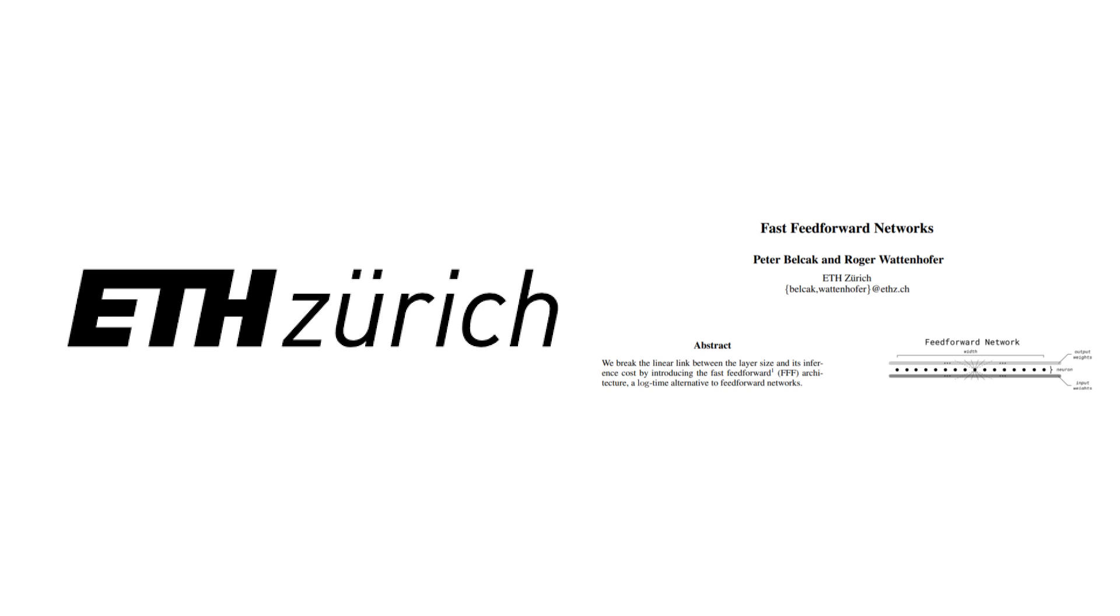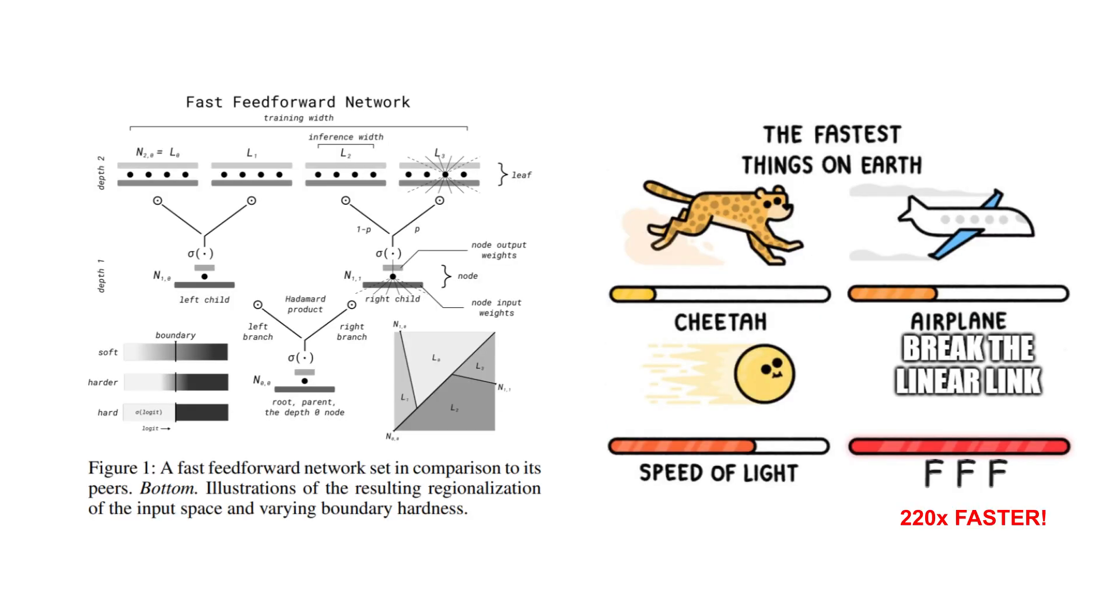Researchers from Zurich introduced a groundbreaking architecture, the fast feedforward network. Fast feedforward networks break the linear link between layer size and inference cost, making them up to 220 times faster than traditional feedforward networks.